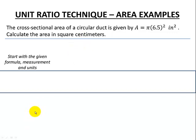Let's start our technique. We're going to start with our given formula, measurement, and units. So we do have a formula again here. Pi times the radius squared, inches squared.